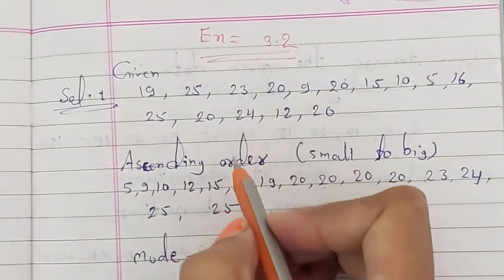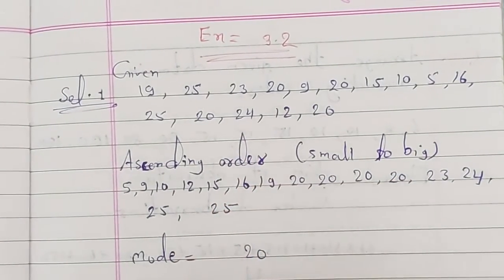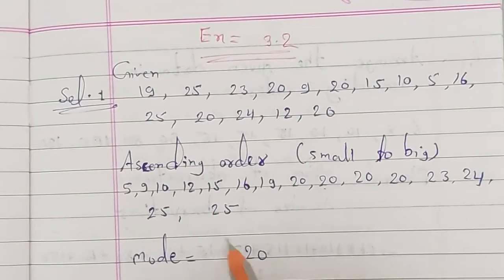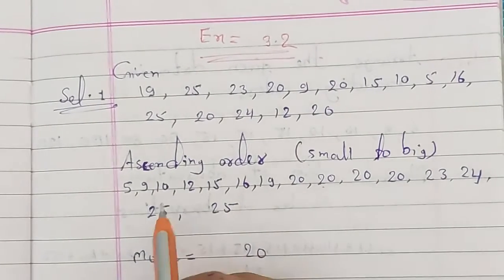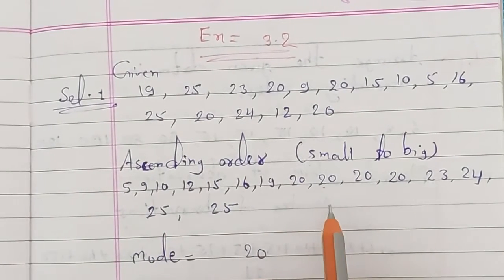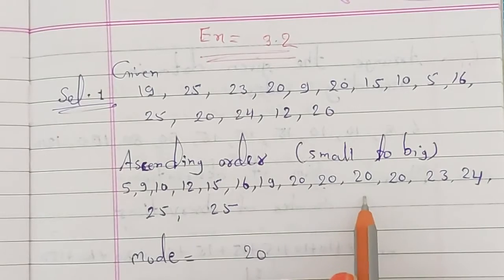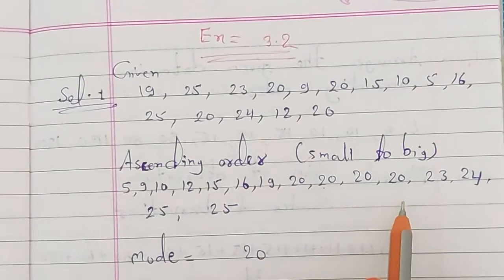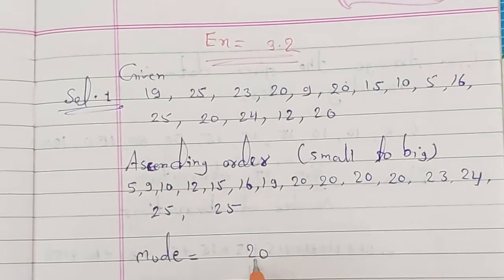We need to find the mode, which means maximum frequency — which digit is coming the most number of times. We can see that 20 appears three times. So the mode will be 20.